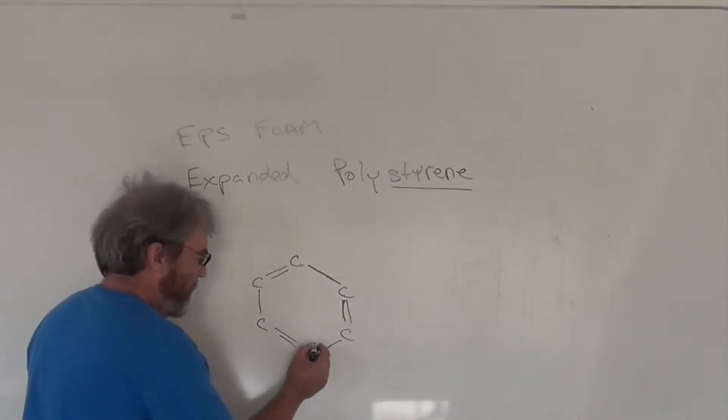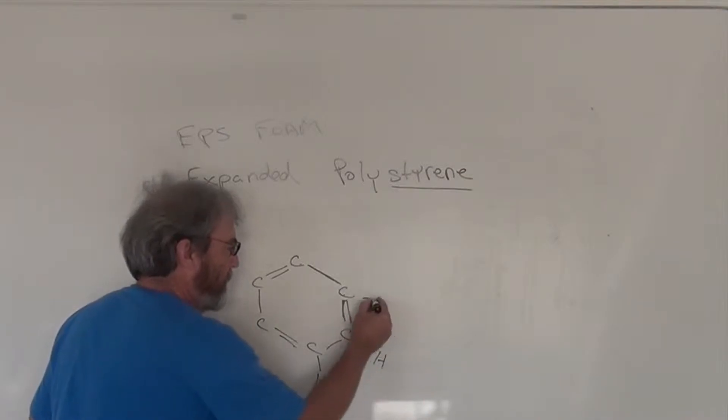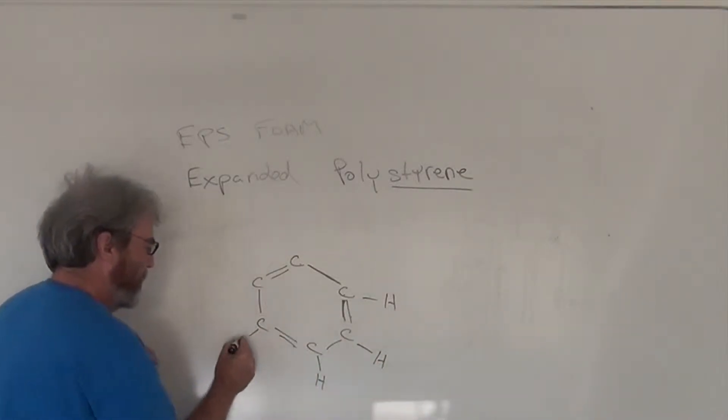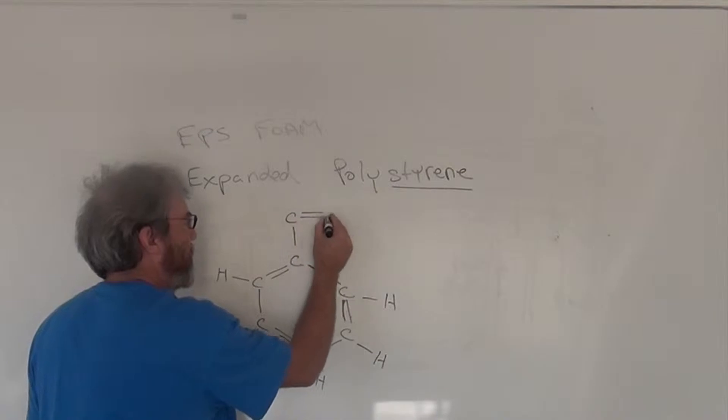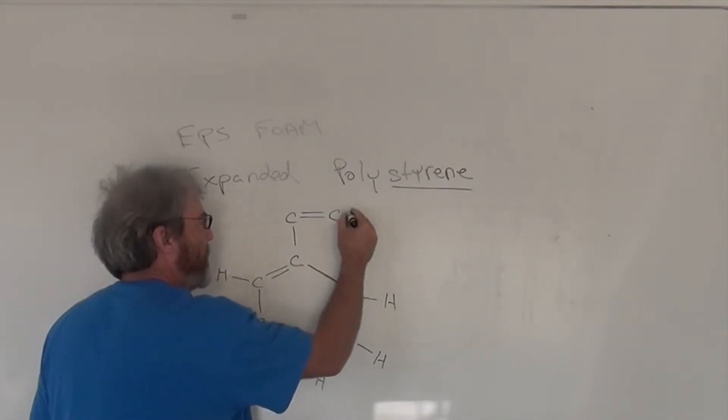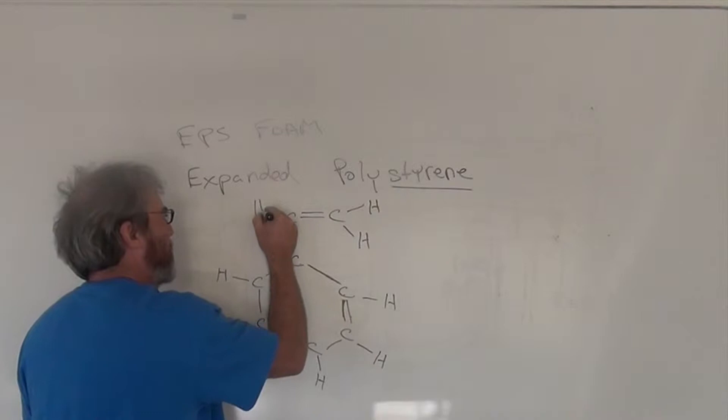So here we have three bonds and here's another bond this time to a hydrogen atom. Hydrogen, hydrogen, hydrogen, hydrogen. And this carbon is bonded to another carbon atom which has two bonds. Another carbon atom. Hydrogen, hydrogen, hydrogen.